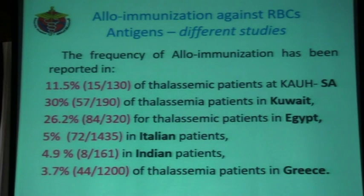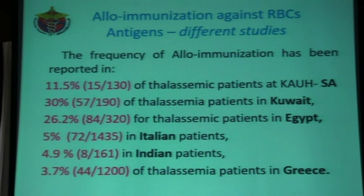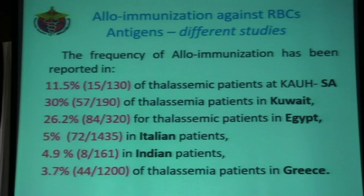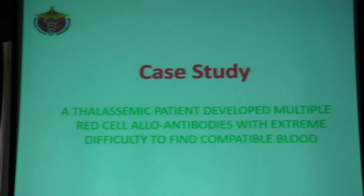Looking at different studies across countries on the rate of alloimmunization: in a study done at King Abdul Aziz University Hospital in Saudi Arabia, the rate was 11.5%. Another study showed 30% alloimmunization. In a study done in Egypt in 2014, the rate was 26.2%. In Italy it was 5%, in India 4.9%, and in Greece 3.7%. There is a wide range of alloimmunization among different countries, which may depend on several factors and the way of managing those patients. Coming to our case study of a thalassemic patient who developed multiple antibodies, and we will see how we managed this patient.